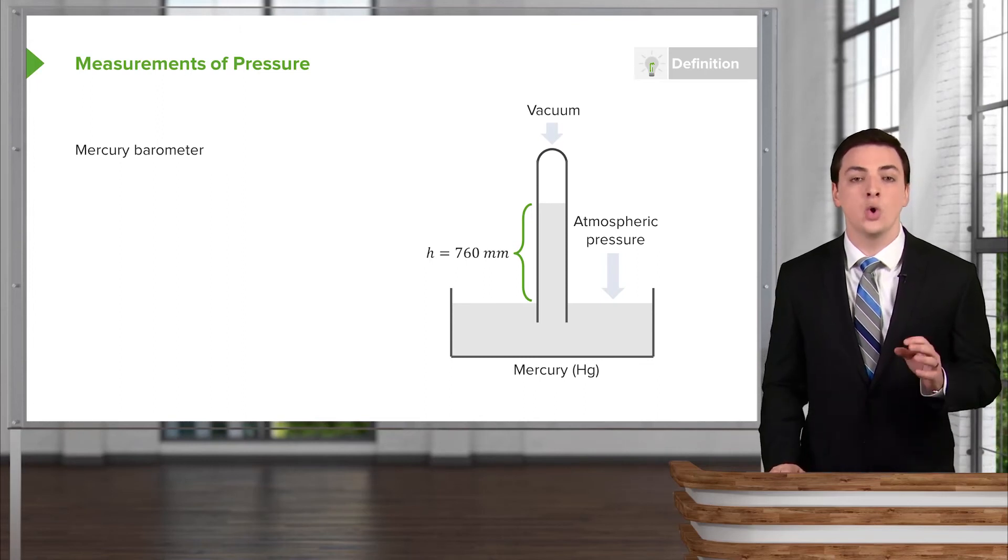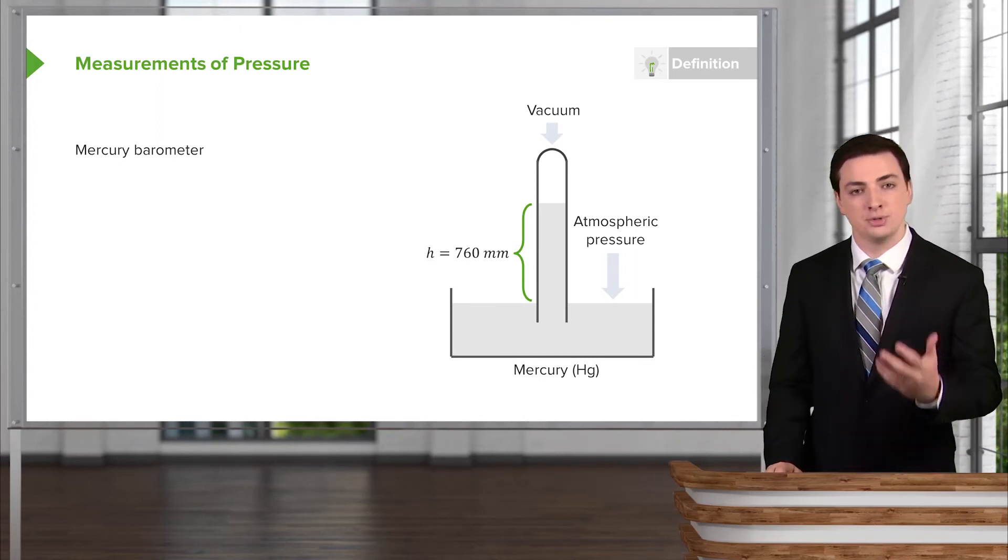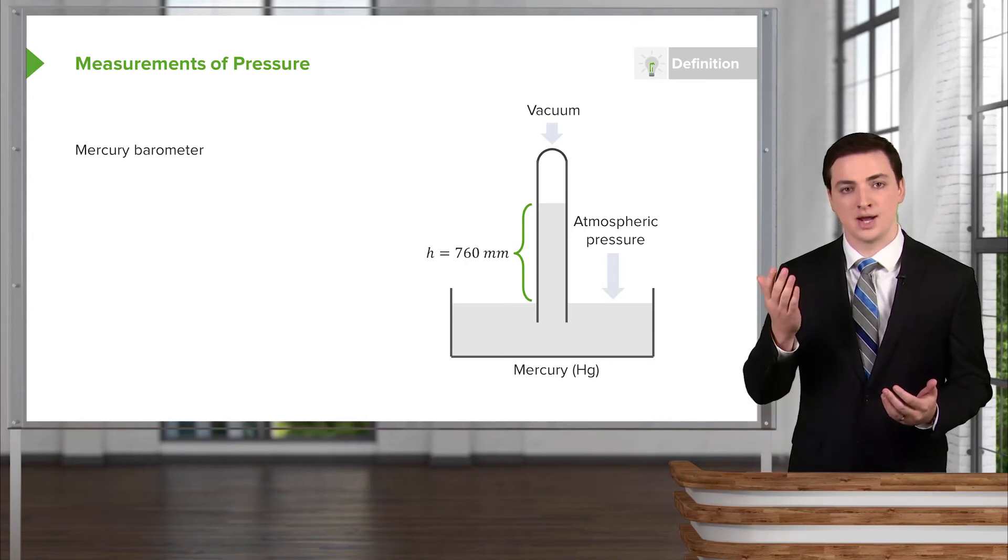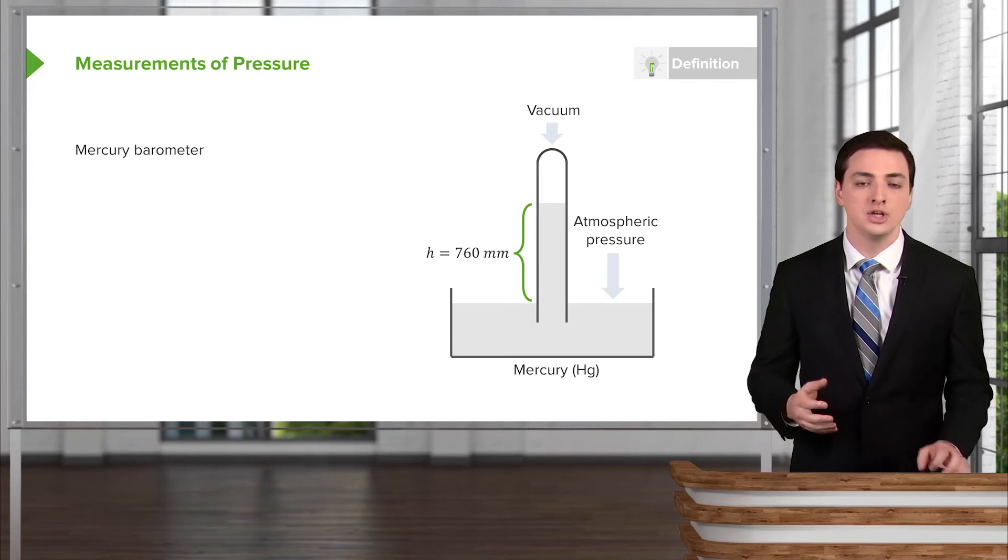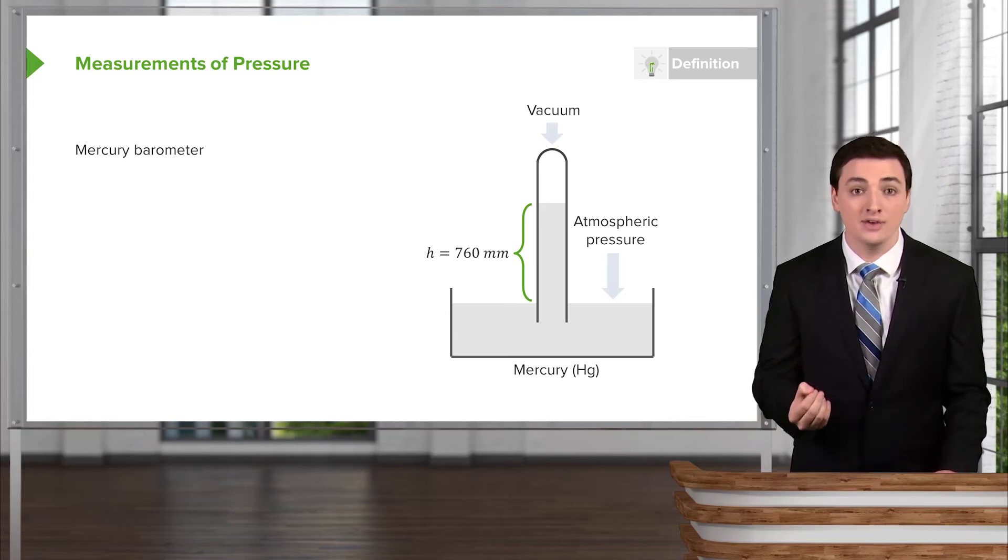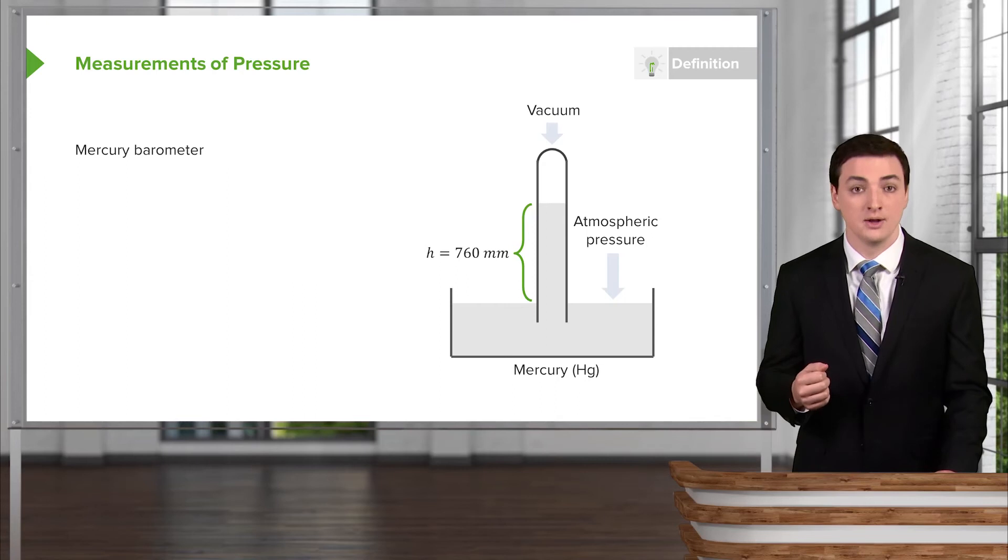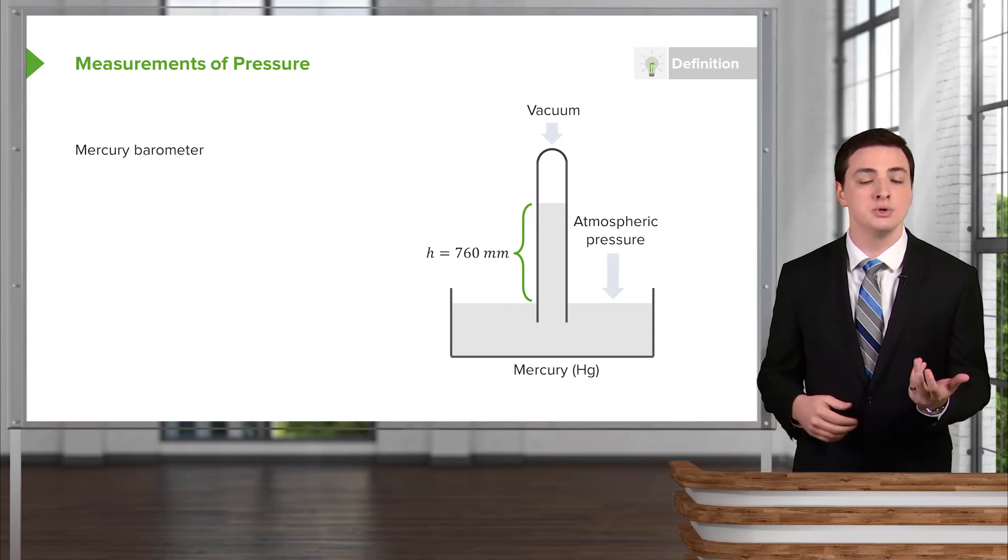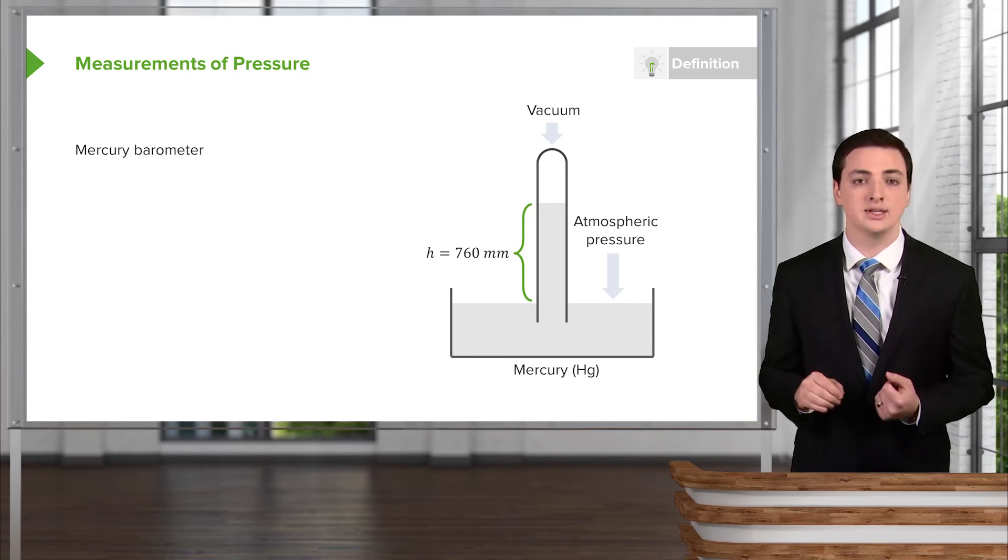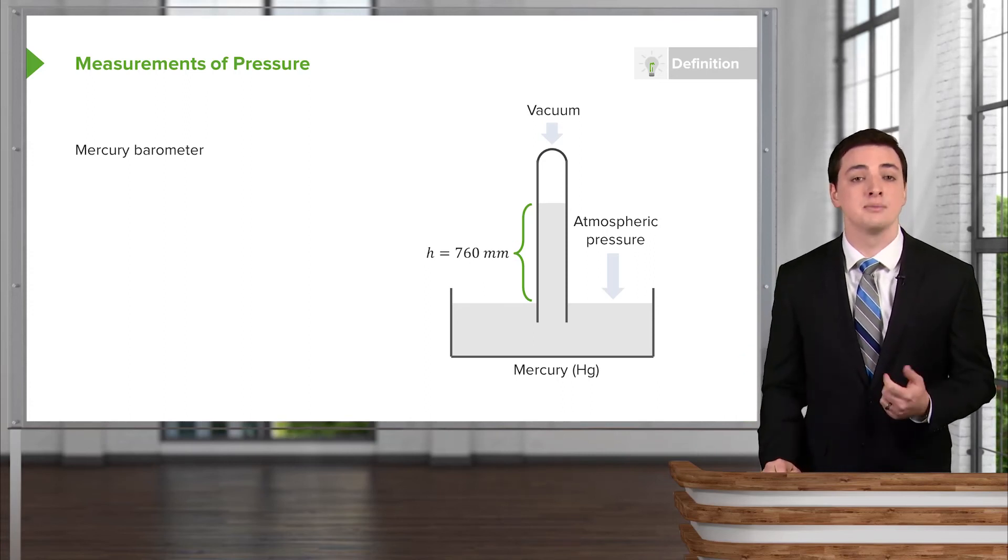What this means is that the only thing fighting the pressure that's pushing the mercury down and trying to cause it to rise is simply the weight of the mercury in the tube itself. So all we have to do is understand how heavy that mercury is, know what the weight is, and we can directly measure and compare the weight of the mercury in the tube to the pressure that's trying to lift it, in this case from the outside, the atmosphere.